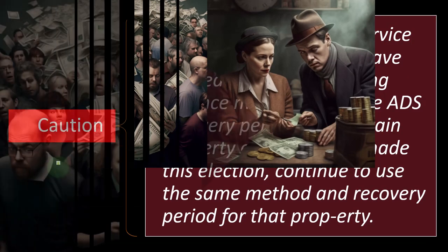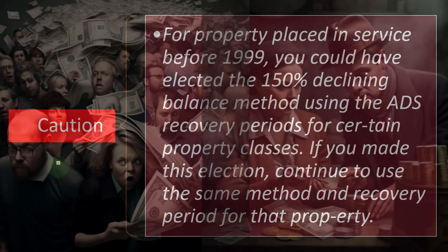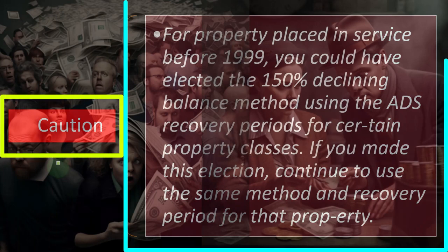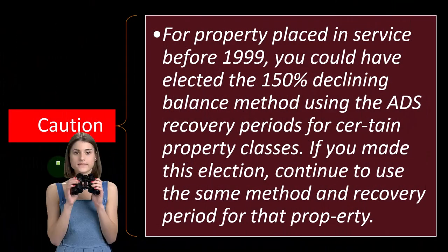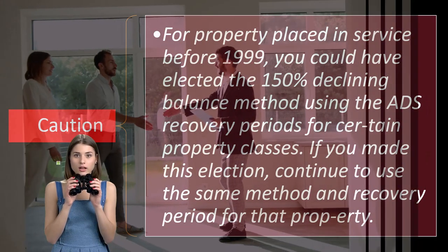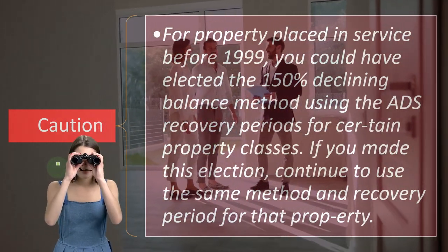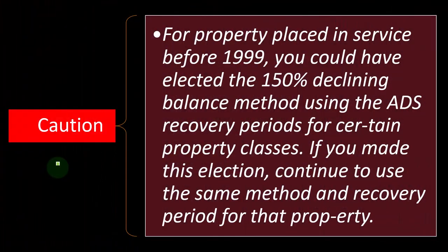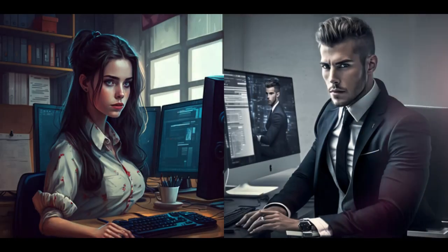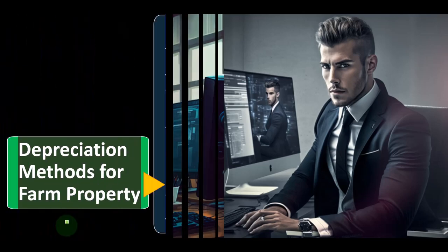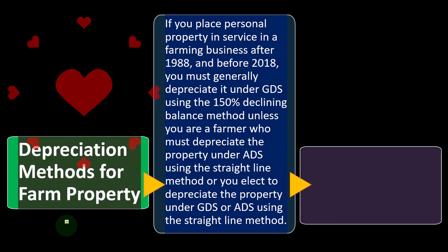Caution: for property placed in service before 1999, you could have elected the 150% declining balance method using ADS recovery periods for certain property classes. If you made that election, continue using the same method and recovery periods for that property. The concept of consistency applies here — you generally can't alter or change methods once they've been put in place. Consistency is required to allocate depreciation properly over the life of the asset.